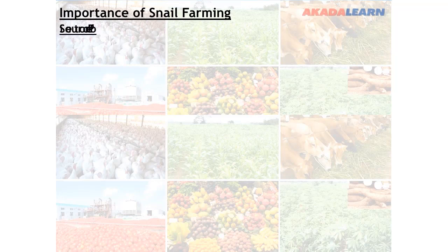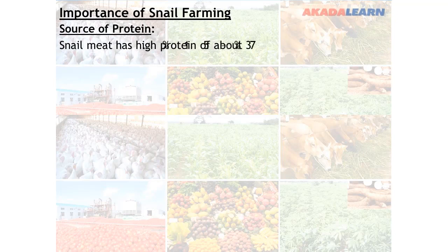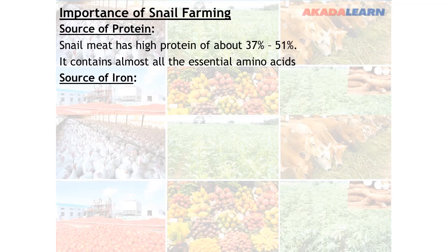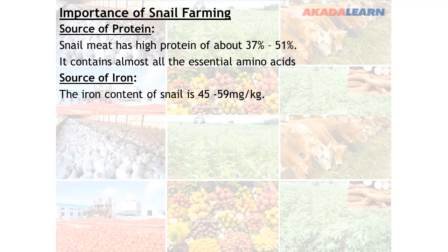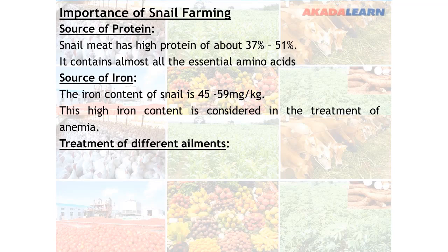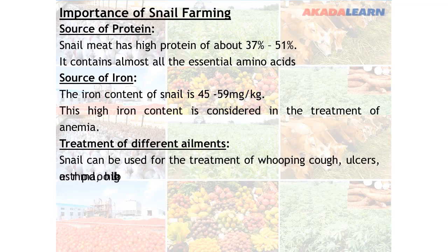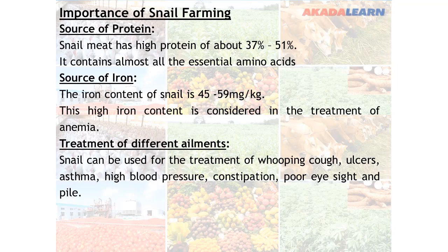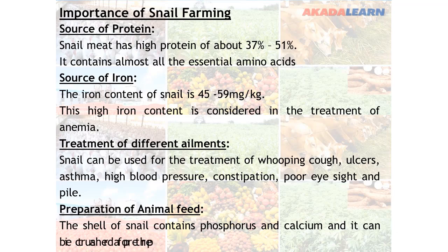The importance of snail farming: First, snails are a source of protein — snail meat has a high protein content of about 37 to 51 percent and contains almost all the essential amino acids. Second, snails are a source of iron; the iron content of snail is 45 to 59 milligrams per kilogram, and this high iron content is considered in the treatment of anemia. Snails can also be used for treatment of different ailments including whooping cough, ulcers, asthma, high blood pressure, constipation, poor eyesight, and piles. The shell of the snail contains phosphorus and calcium and can be crushed for the preparation of animal feed.